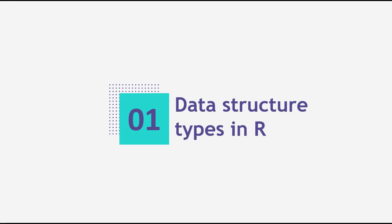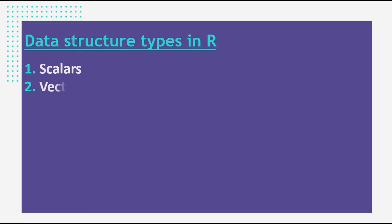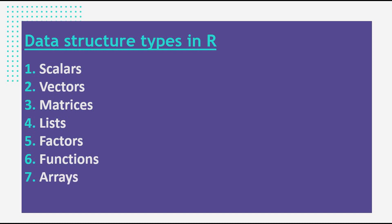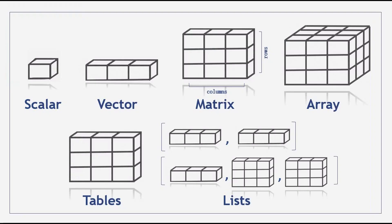Before we start, I want to give you a general idea about data structure types in R. Data structure types in R can be scalars, vectors, matrices, lists, factors, functions, arrays, and data frames. We are going to discuss two of them today and all of them in the next few videos. I drew this figure to help you understand.